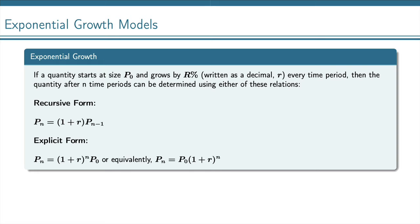If a quantity starts at size P0 and grows by r%, which we'll write in the decimal form, little r, every time period, then the quantity after n time periods is determined using one of these formulas.